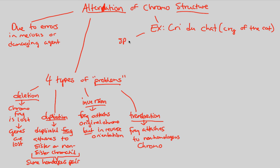In this specific example, we have a very specific deletion. What is a deletion? A deletion is a type of problem seen in the alteration of chromosome structure. This is a specific deletion at chromosome 5. The genes on chromosome 5 are deleted, thus they are lost, thus they won't be expressed.